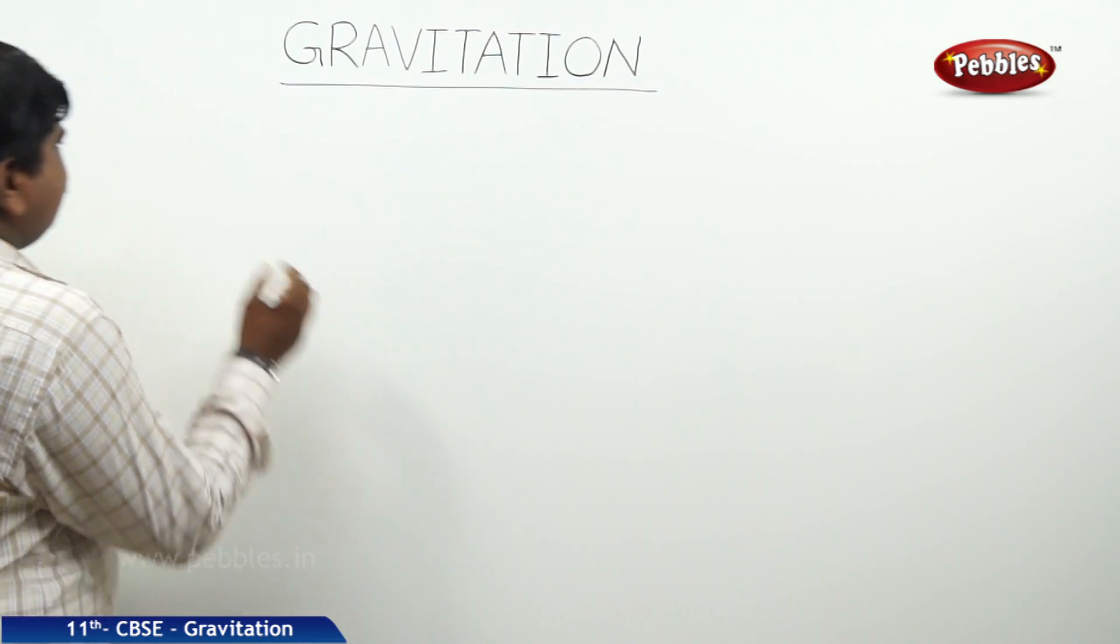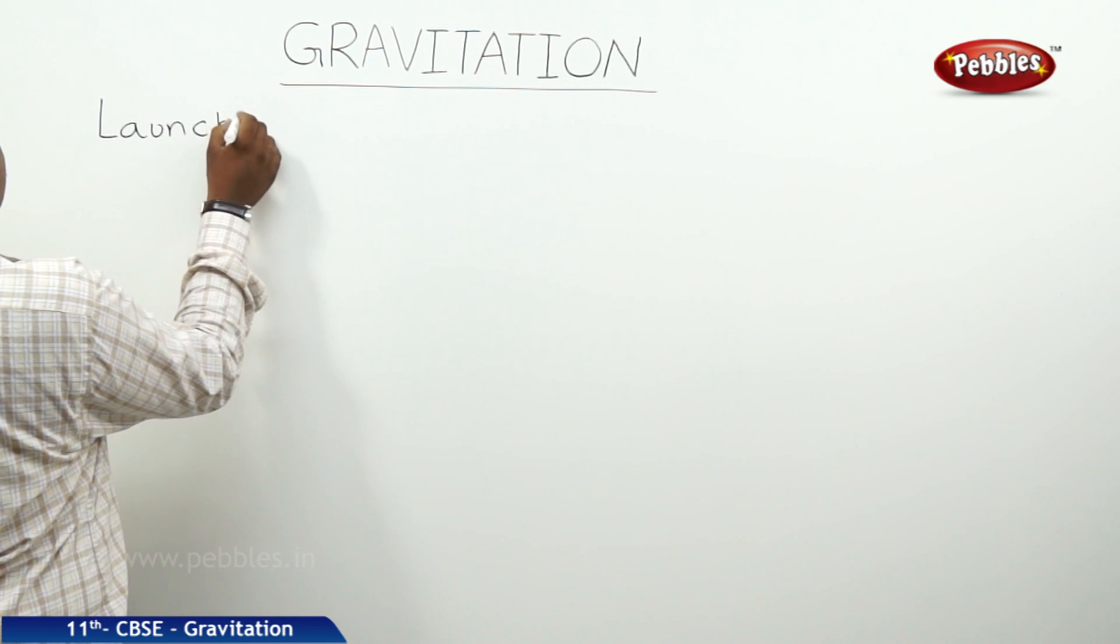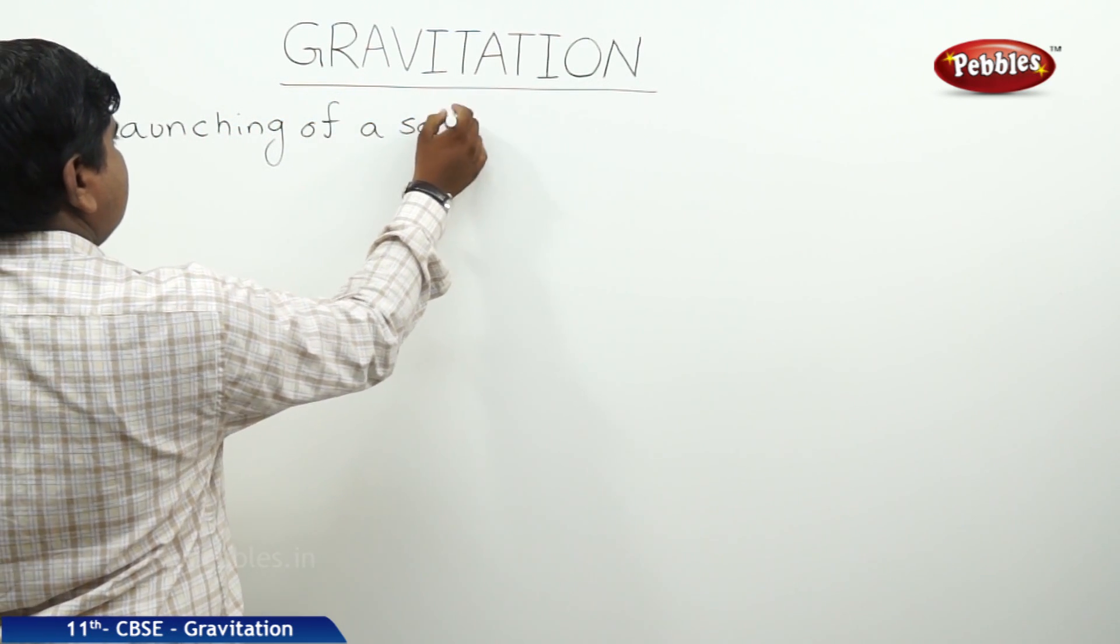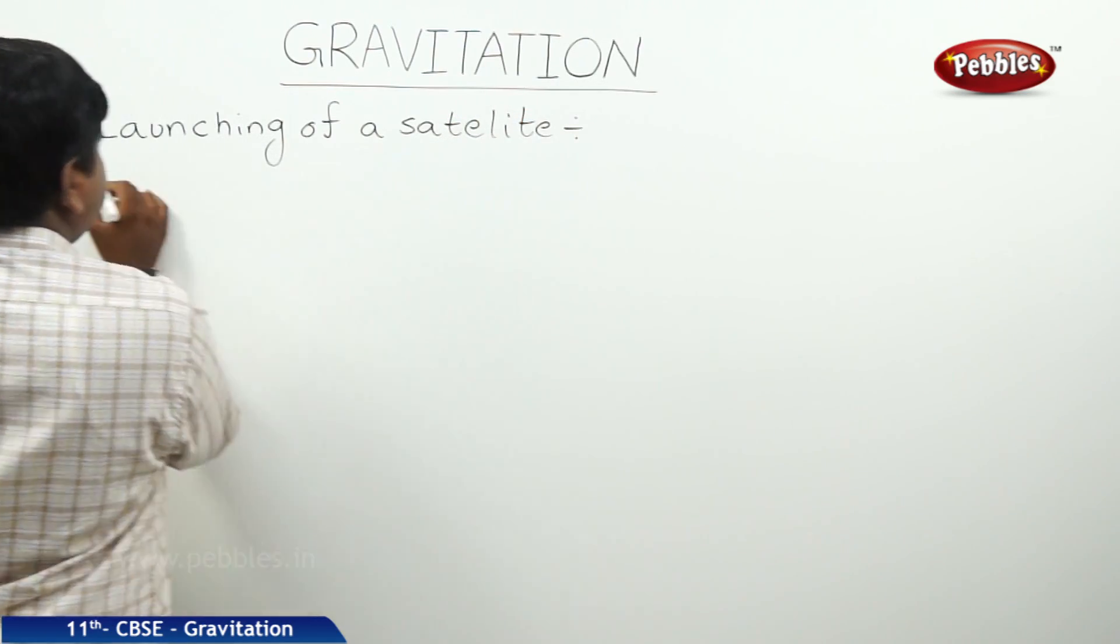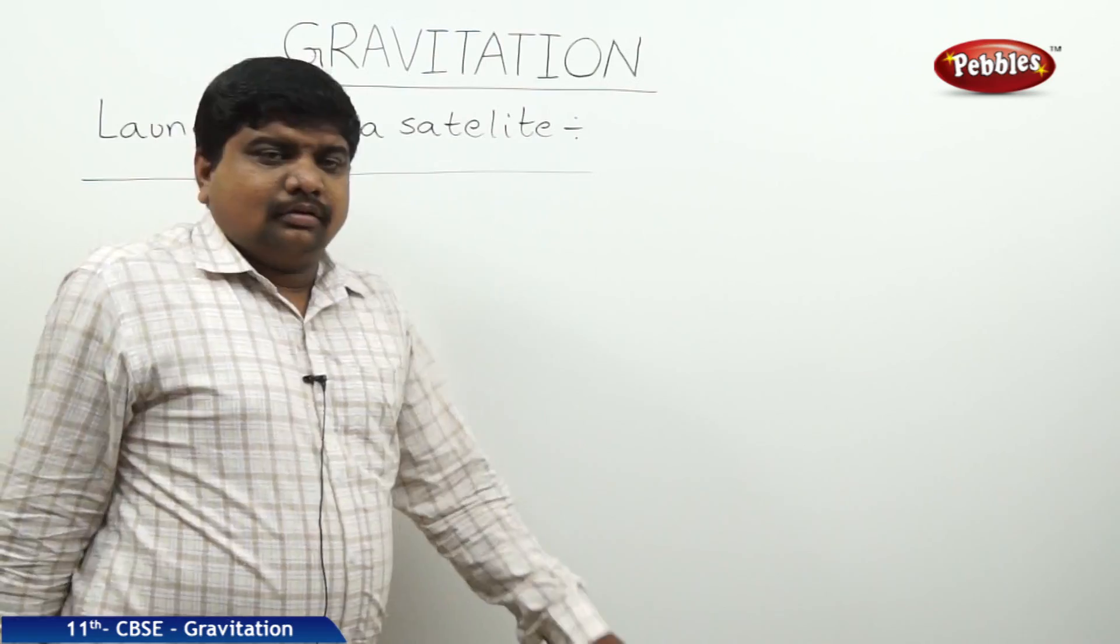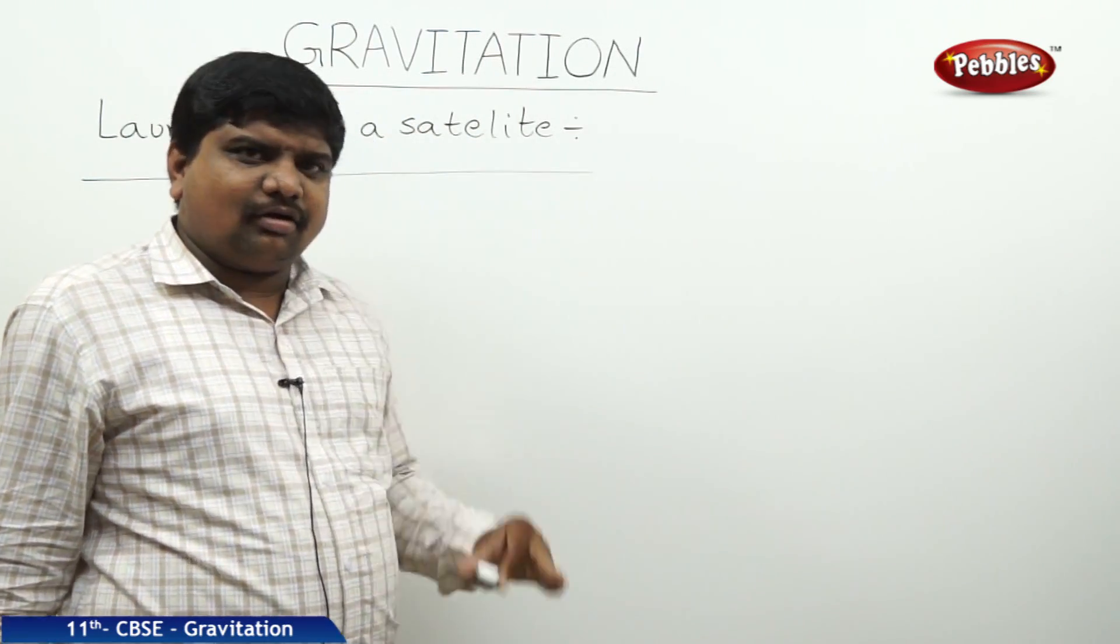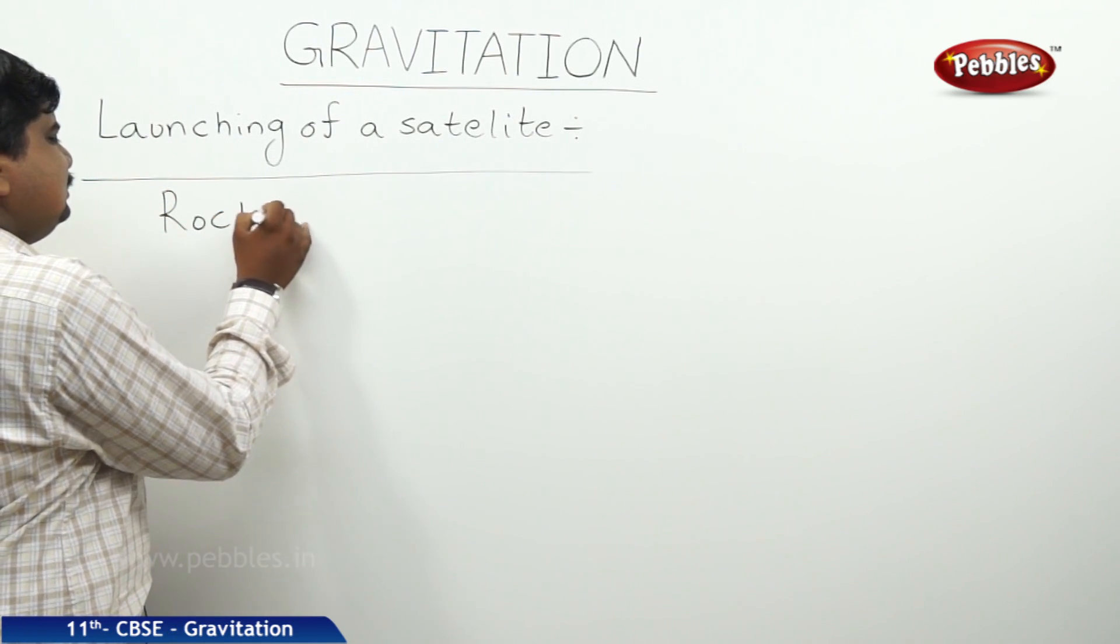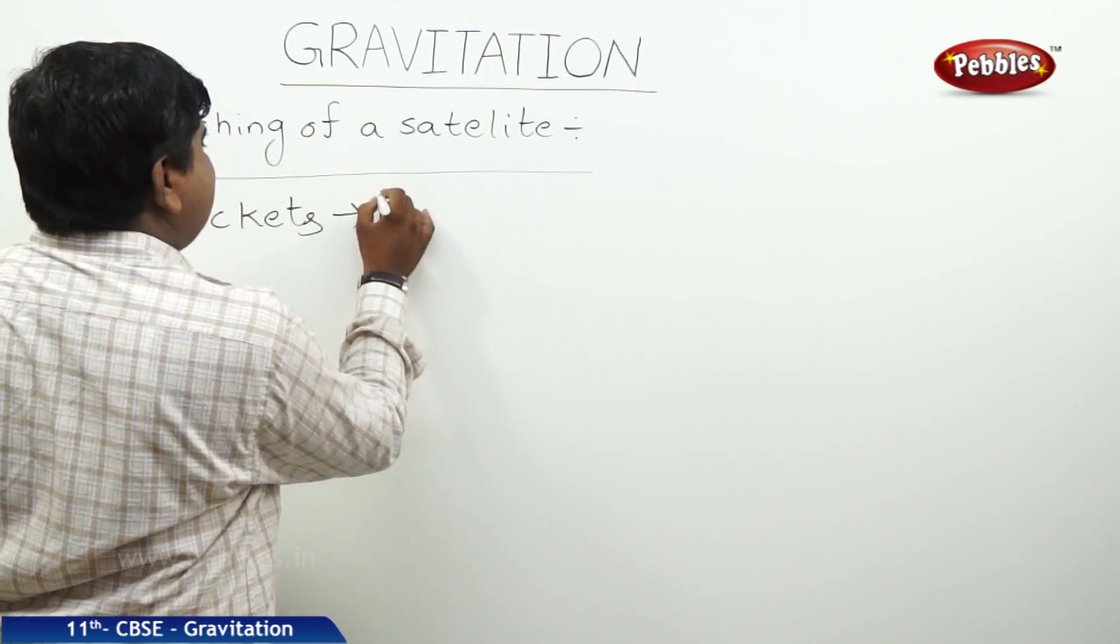Now, we will discuss about the launching of a satellite. The rocket or the satellite launching vehicles are called rockets. These rockets, to launch the satellites, the scientists are using multi-stage rockets.